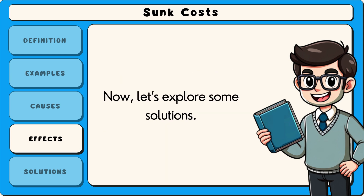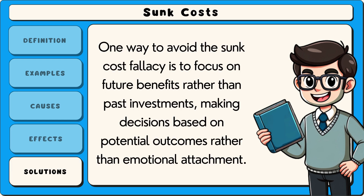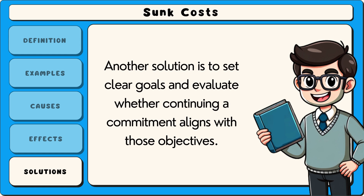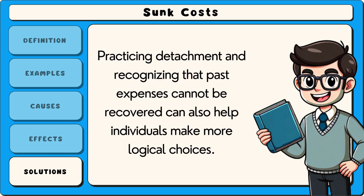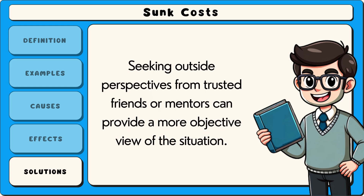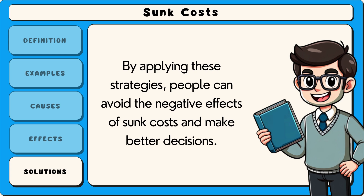Now let's explore some solutions. One way to avoid the sunk cost fallacy is to focus on future benefits rather than past investments, making decisions based on potential outcomes rather than emotional attachment. Another solution is to set clear goals and evaluate whether continuing a commitment aligns with those objectives. Practising detachment and recognising that past expenses cannot be recovered can also help. Seeking outside perspectives from trusted friends or mentors can provide a more objective view. By applying these strategies, people can avoid the negative effects of sunk costs and make better decisions.